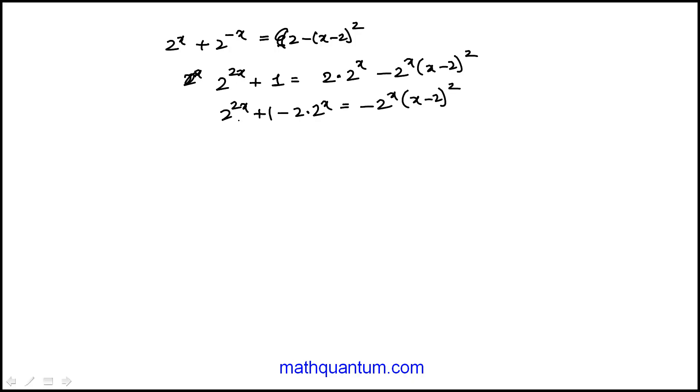Just many different ways to go about it. This was 2 to the x minus 1 squared. Now at this point I failed to see that this is positive, that's positive.